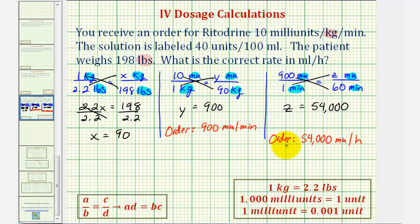For the next step, we'll convert the 54,000 milliunits to units. Then once we find the number of units, we can determine the number of milliliters per hour. Let's go and continue this on the next slide.